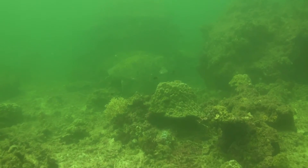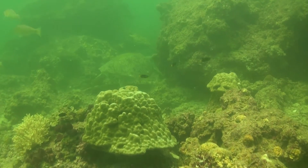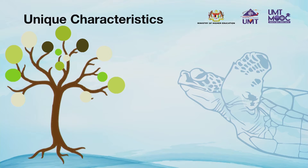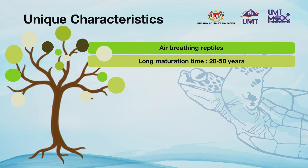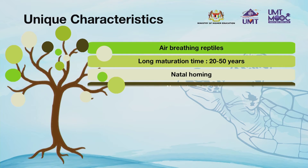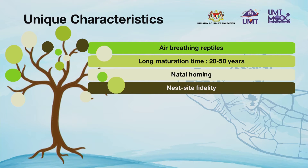Even though sea turtles spend 99.9% of their life underwater, they breathe air so they need to surface to get air. Failing to do so, sea turtles will drown. They have a long maturation time of about 20 to 50 years, and because of this, they face a high mortality rate. Sea turtles will return to breed only at the place where they were born, a term called natal homing. They also show nest site fidelity, coming back to nest on the same beach over and over. This was proven by long-term tagging programs, for example the tagging program by Universiti Malaysia Terengganu at Redang Island.